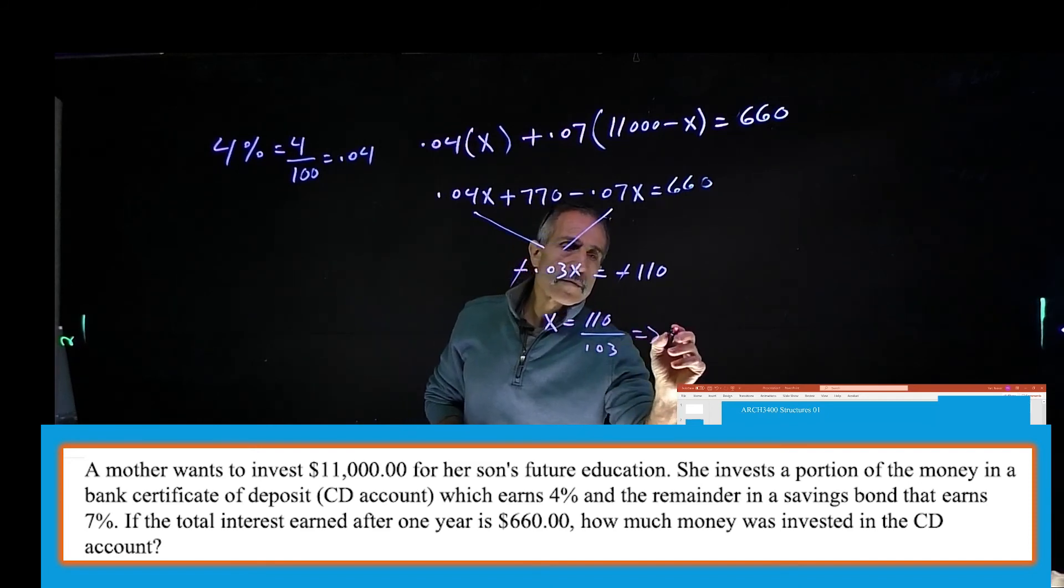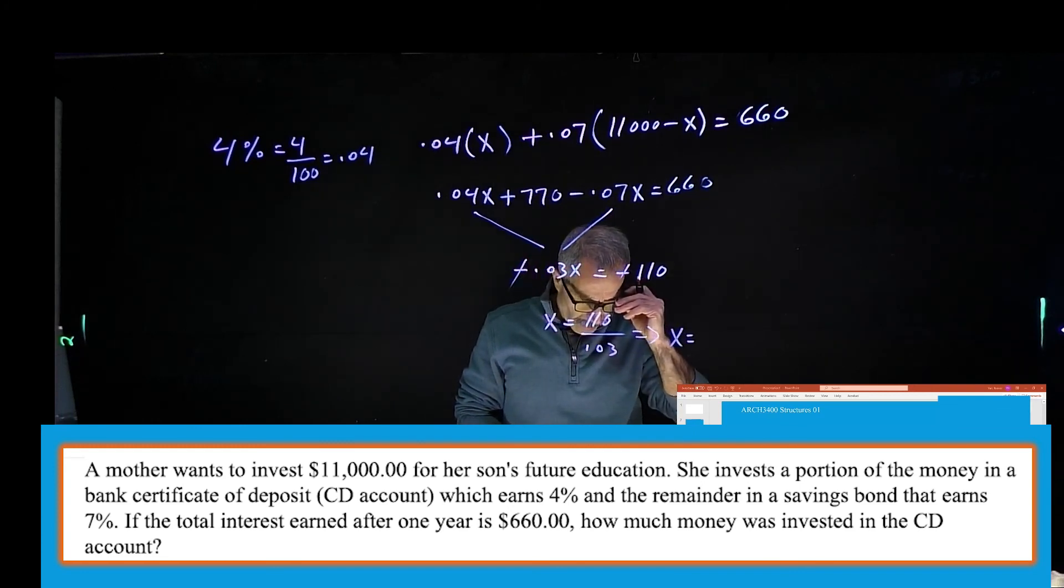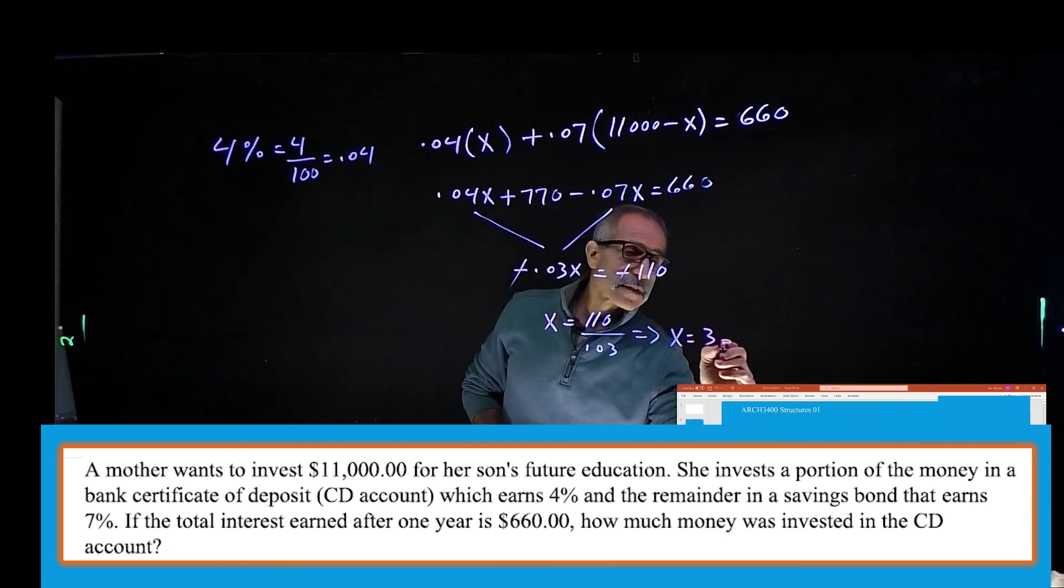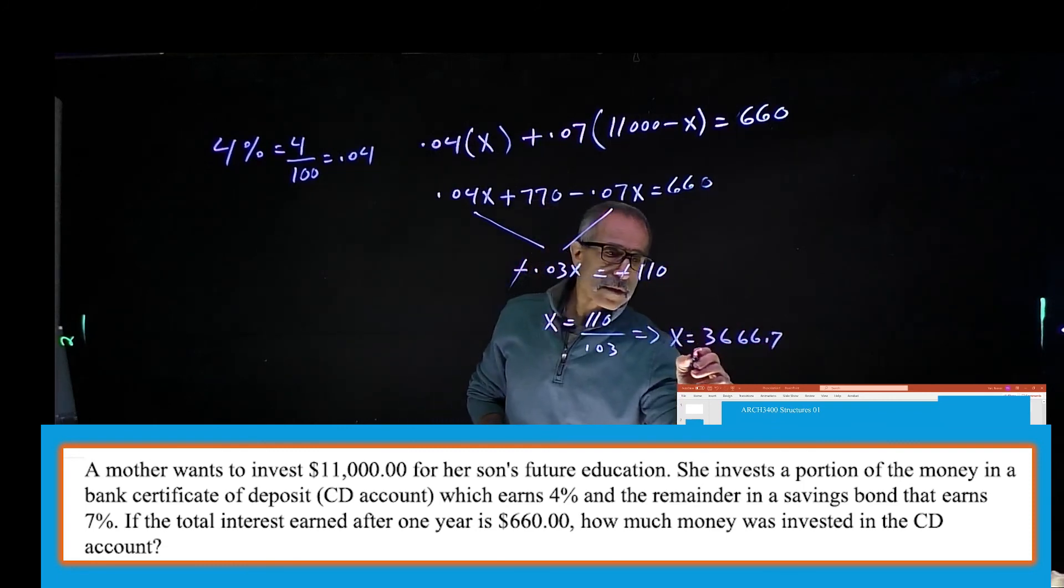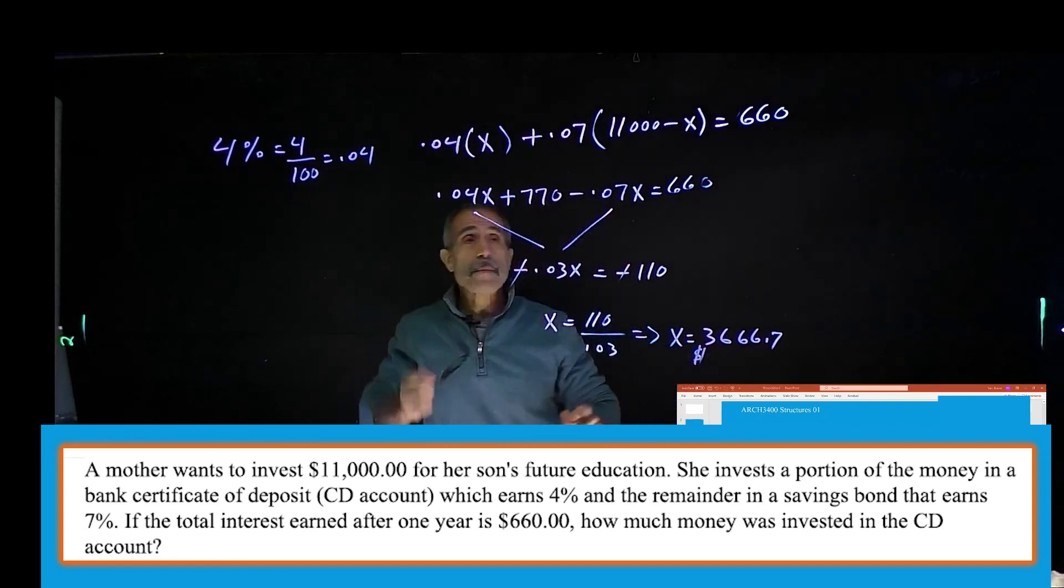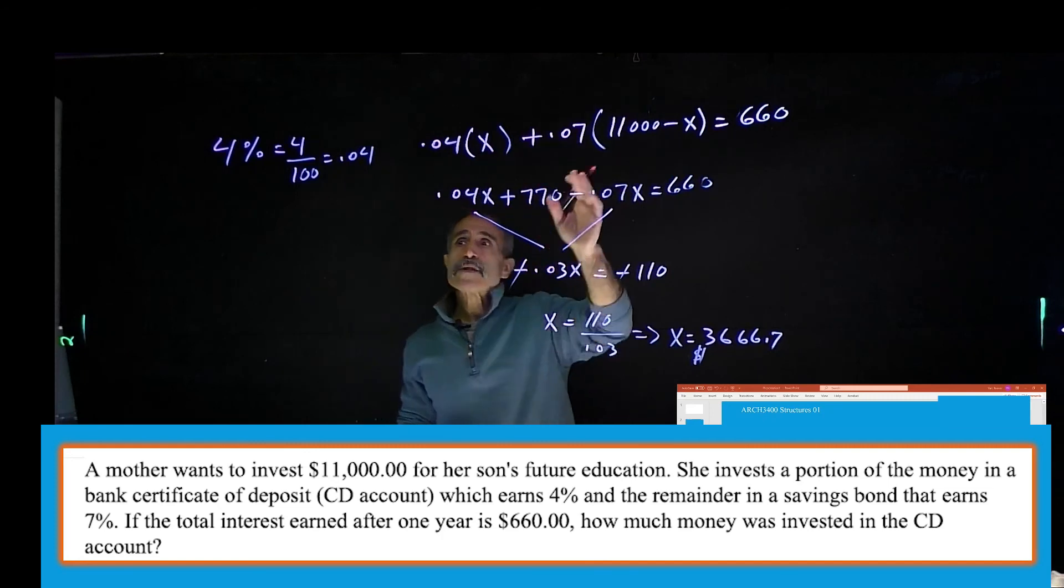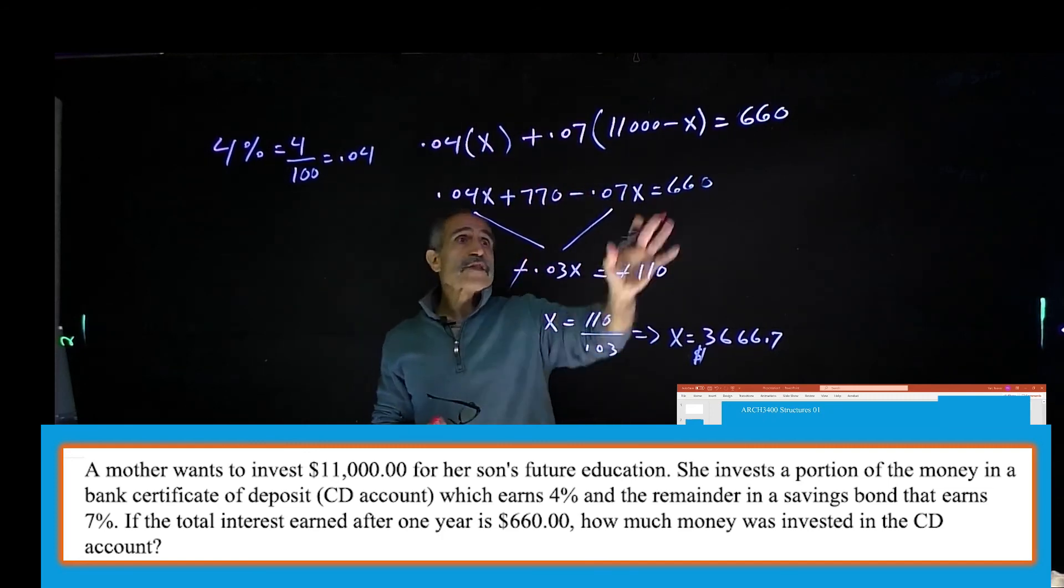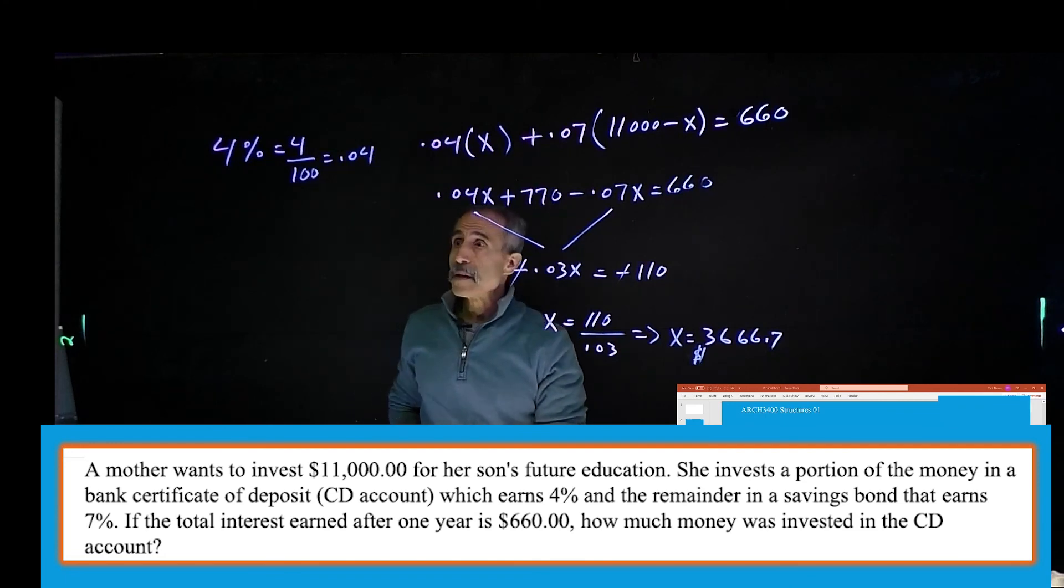Therefore, my X has come out to $3,666.67. So that's how much she invested in that account. The rest of it, of course, you can figure it out. If this was really hard to understand, there's an easy way we can do this. Let me do it right here.